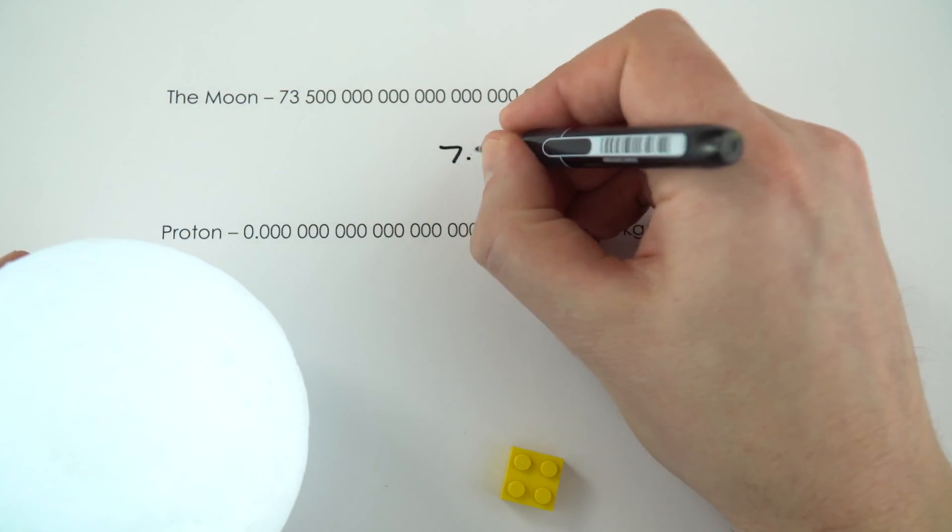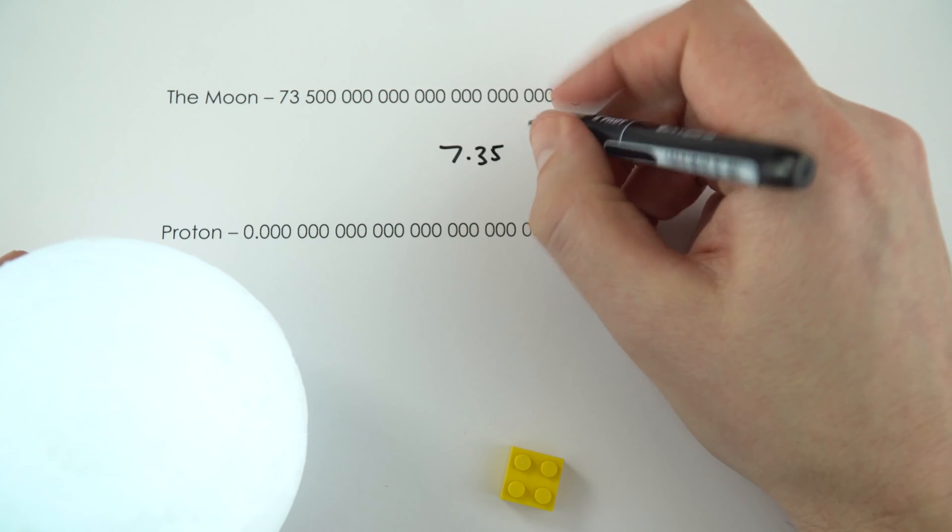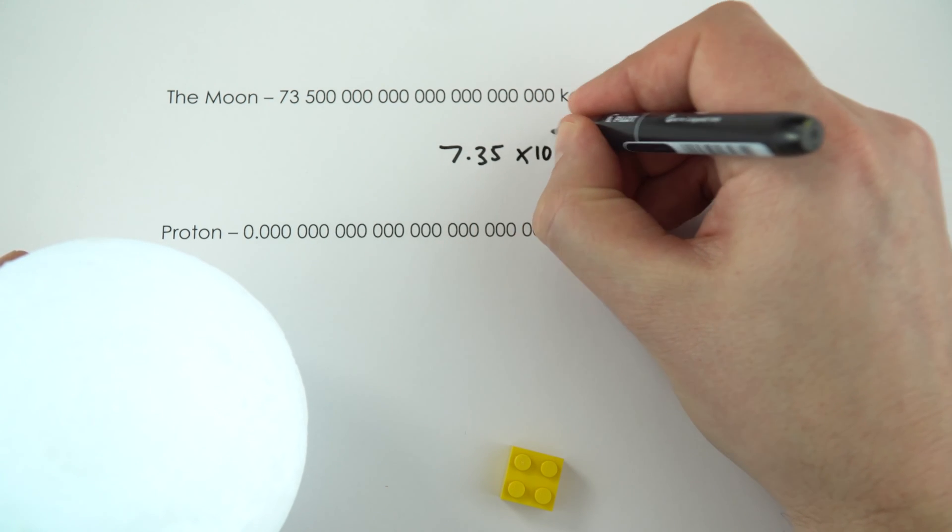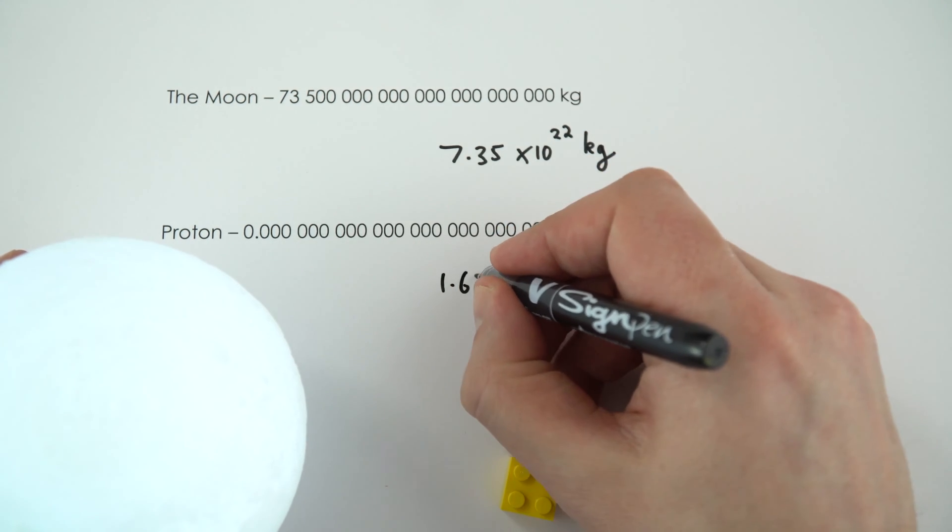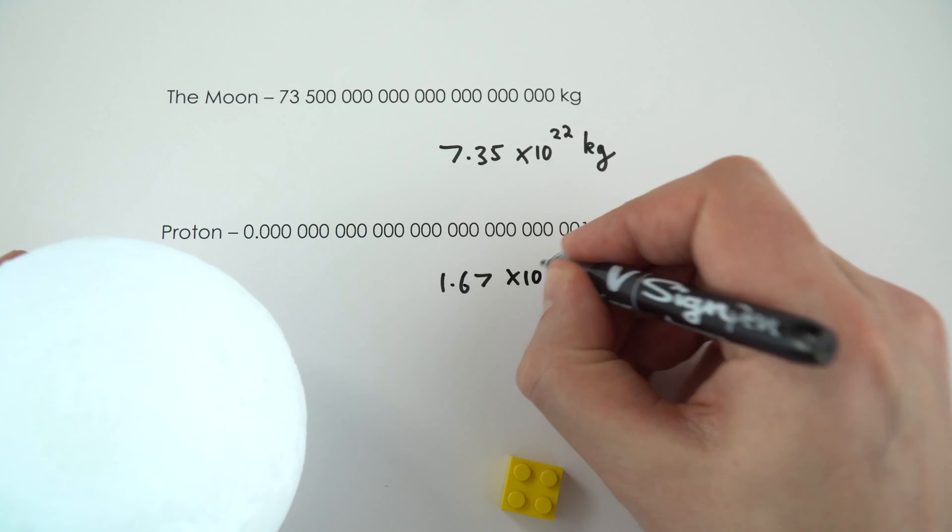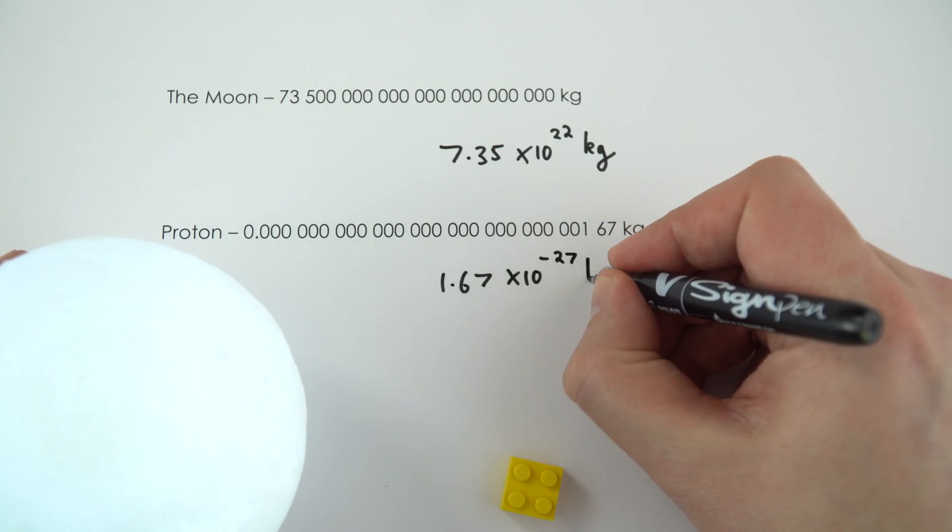So the moon, we write it out as 7.35 times 10 to the 22 kilograms, and things which are really small, like the mass of a proton, is 1.67 times 10 to the minus 27 kilograms.